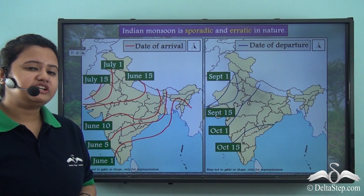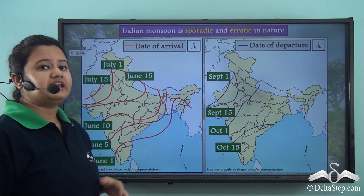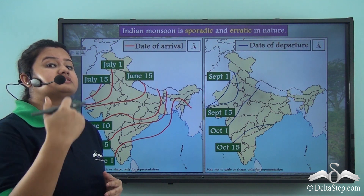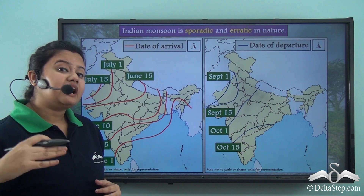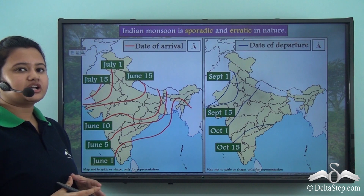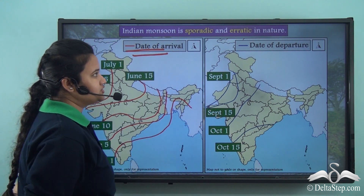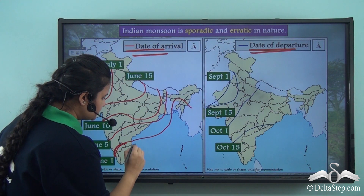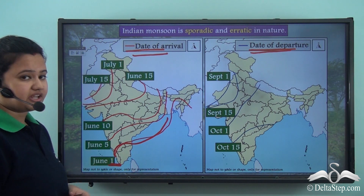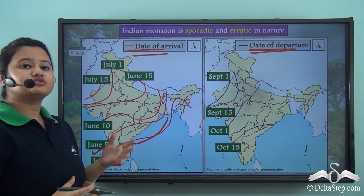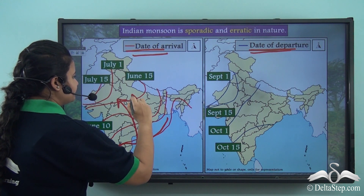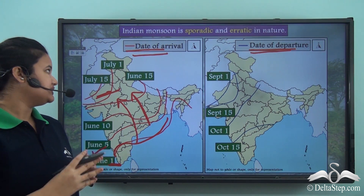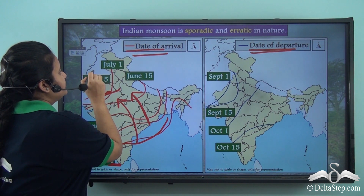Another important feature of Indian monsoon is that not all of India enjoys rain at the same time. There are some parts where rain comes early whereas there are some other parts where rainfall occurs in other months. The first chart shows the date of arrival of monsoon and the second chart shows the date of departure of monsoon winds. The southern part of the country receives rain first, almost by the first week of June. Then the monsoon winds gradually proceed towards the northern plains. The northwestern part of the country is the last to receive the monsoon winds, at around the mid-week of July.